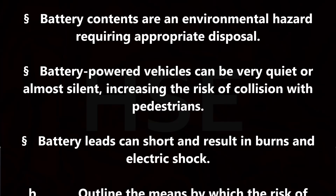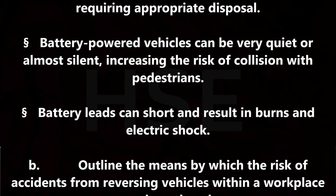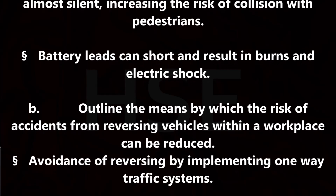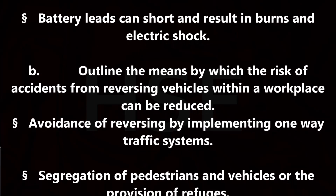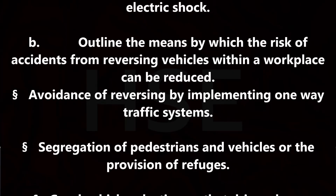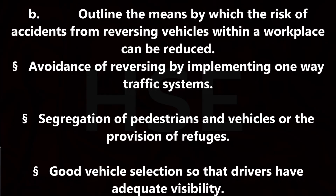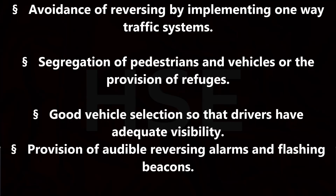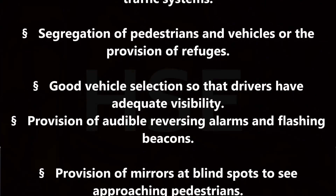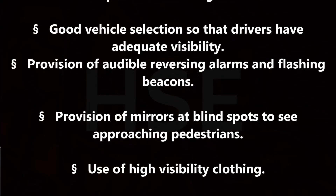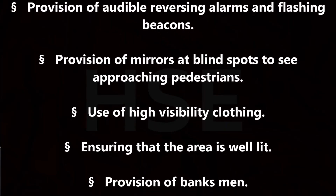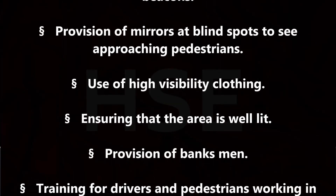Outline the means by which the risk of accidents from reversing vehicles within a workplace can be reduced. Avoidance of reversing by implementing one-way traffic systems. Segregation of pedestrians and vehicles, or the provision of refuges. Good vehicle selection so that drivers have adequate visibility. Provision of audible reversing alarms and flashing beacons. Provision of mirrors at blind spots to see approaching pedestrians. Use of high visibility clothing. Ensuring that the area is well lit. Provision of banksmen. Training for drivers and pedestrians working in the area.